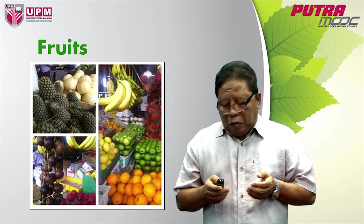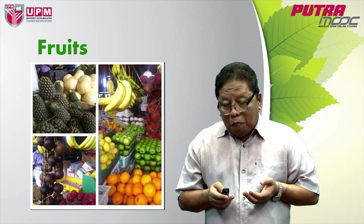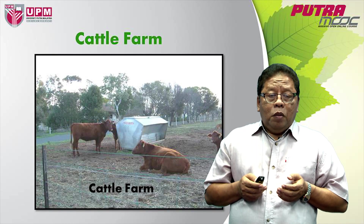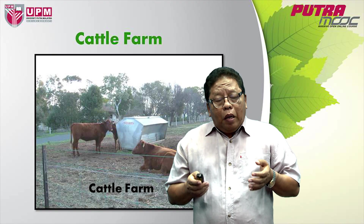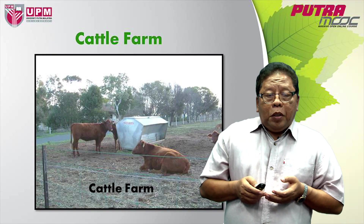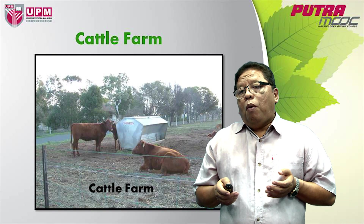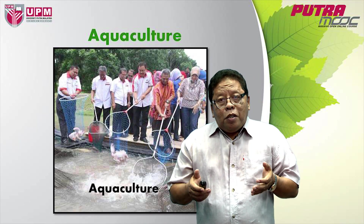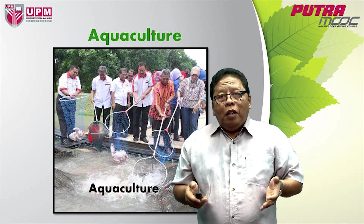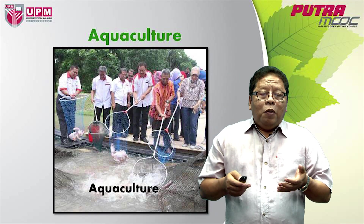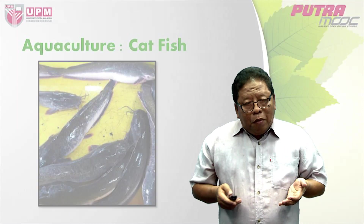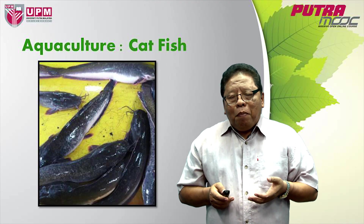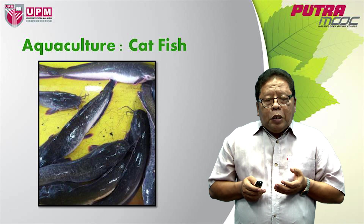These are the products from agriculture. Besides crops and plants, we also have animal production. In this case it's the cattle farm — these cattle are reared for their meat, or beef, and also for milk, which are called dairy cattle. We also have aquaculture where fish are cultured or reared in the water, and at the right time will be harvested. This is a very famous fish called the catfish, because it has a very nice moustache, and it is a very popular species for aquaculture production.